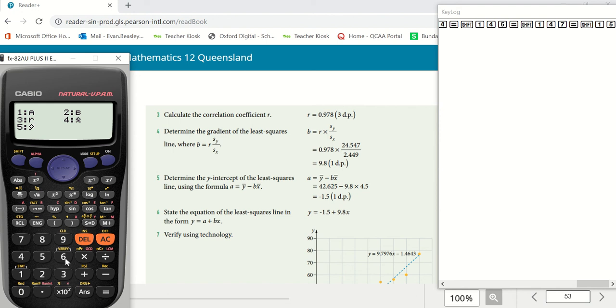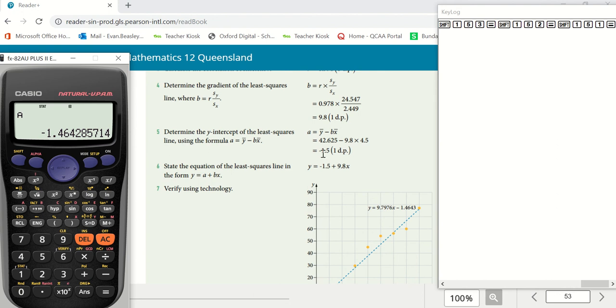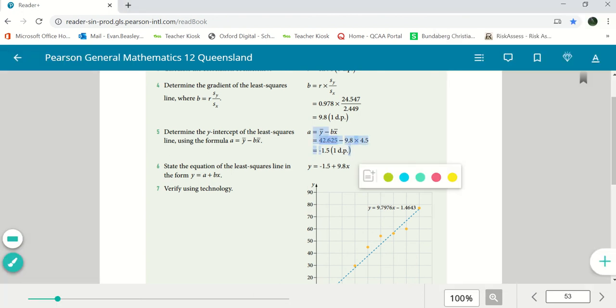So we first of all retrieve the correlation coefficient: 0.978. Let's go shift one and then we'll go to five. Let's retrieve our b first of all, that's 9.788 rounded off there. Shift one, five, and we'll go to one, and negative 1.46. We're saying negative 1.5 here to one decimal place.